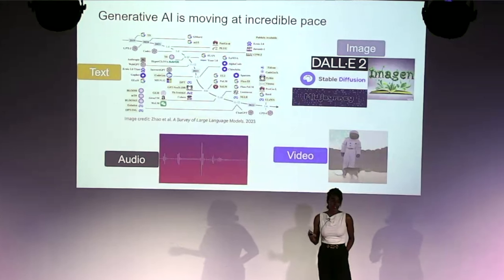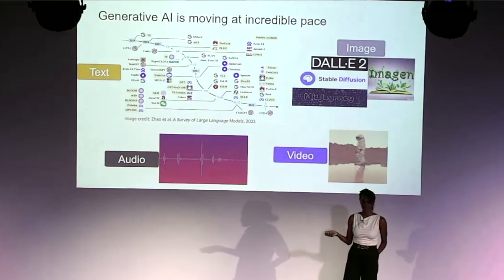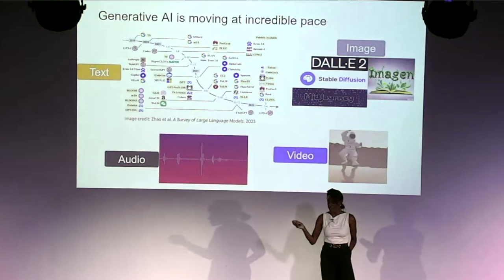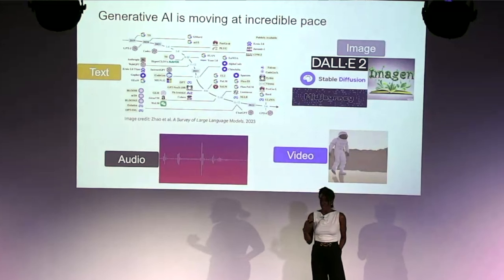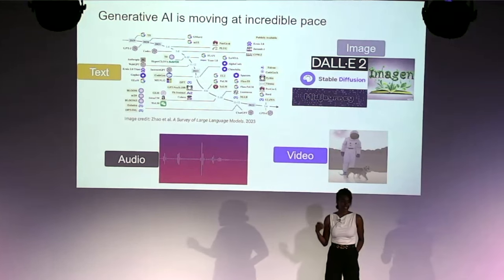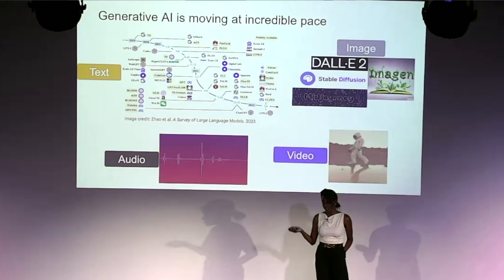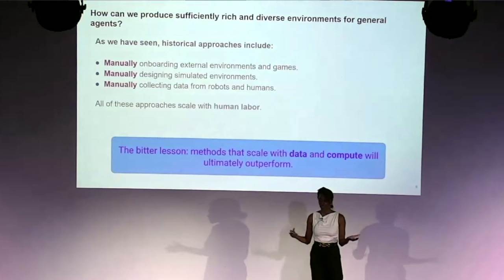In the past few years, we've seen text generation models go from proof of concept to the hands of millions of people, and the same for text-to-image, text-to-video, and now text-to-audio models. The power behind these works is largely the vast amount of data they've been trained on — more data gets you more general models. The key question I want to consider is how we can get this kind of scale for training generalist reinforcement learning agents.